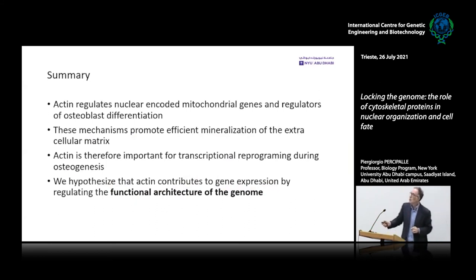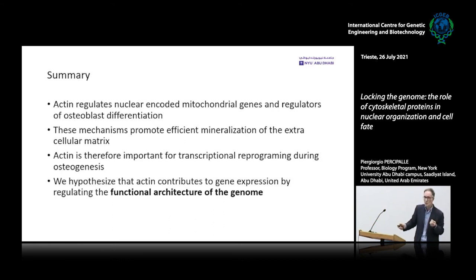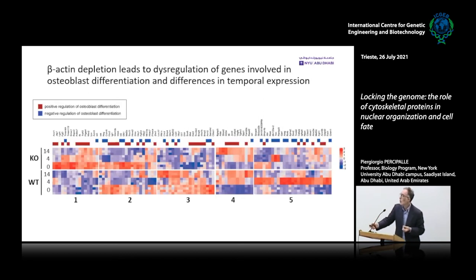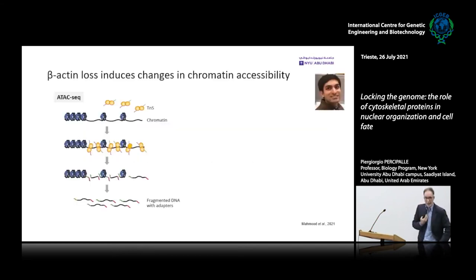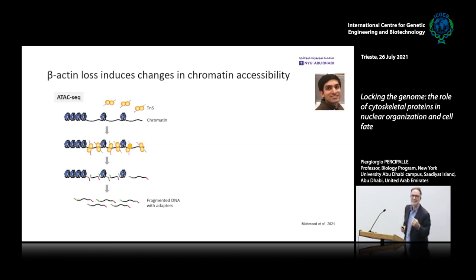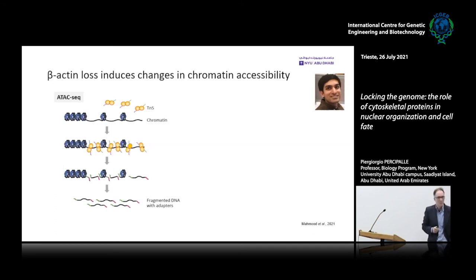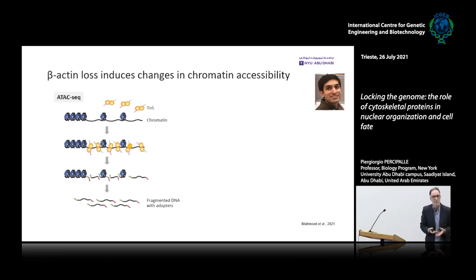Taken together, we hypothesized that there is an implication in the functional architecture of the genome. If actin has a role in temporal gene expression, the genome must be dynamic yet stable. To address this, I recruited a talented PhD student, Reza, with bioinformatics expertise. We generated ATAC-seq data to study chromatin accessibility in the absence of beta-actin, and Hi-C data to study whether genomic interactions are modified. ATAC-seq uses the transposase TN5 engineered with adapters — TN5 interacts with open chromatin regions, and combined with deep sequencing gives high-resolution insights into chromatin compaction.